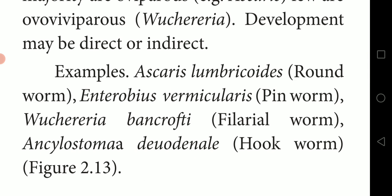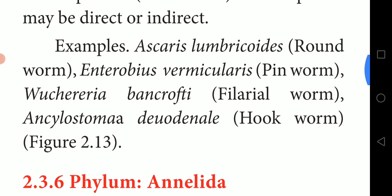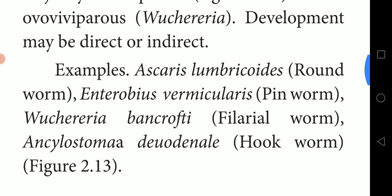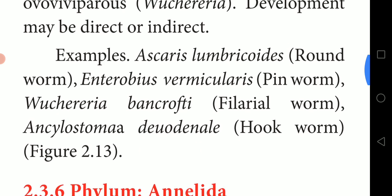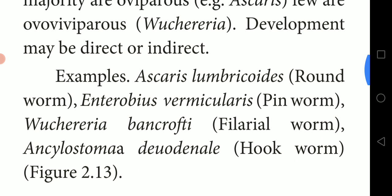Examples of Aschelminthes include: Ascaris lumbricoides (roundworm), Enterobius vermicularis (pinworm), Wuchereria bancrofti (filarial worm), and Ancylostoma duodenale (hookworm). These are the characteristic features of Phylum Aschelminthes.